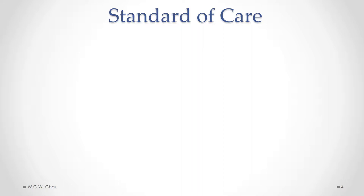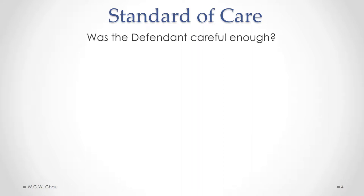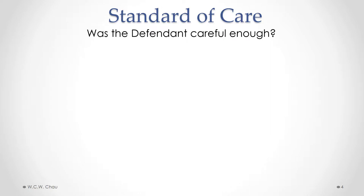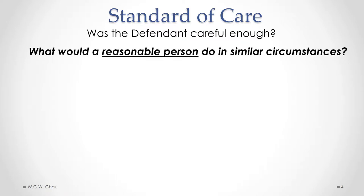Whether or not a particular person is liable for negligence, the plaintiff has to show that the defendant breached the applicable standard of care. So the question that we need to consider is, was the defendant careful enough? Or an even more specific question that a court would look at would be, what would a reasonable person do in similar circumstances? Now, that begs the question, who is this reasonable person?